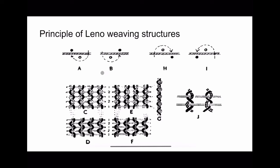Now let's discuss the principles of lino weaving structures. There are two strands of warp and one weft yarn. In the first pick, the crossing end is in the top shed and the standard yarn is in the bottom shed, with the crossing yarn on the left side of the standard end. In the next pick, the crossing yarn is again on top and the standard yarn again on the bottom shed, but now the crossing yarn is on the right side of the standard yarn. In between these two picks, when the second shed is forming, the crossing yarn crosses beneath the standard yarn.